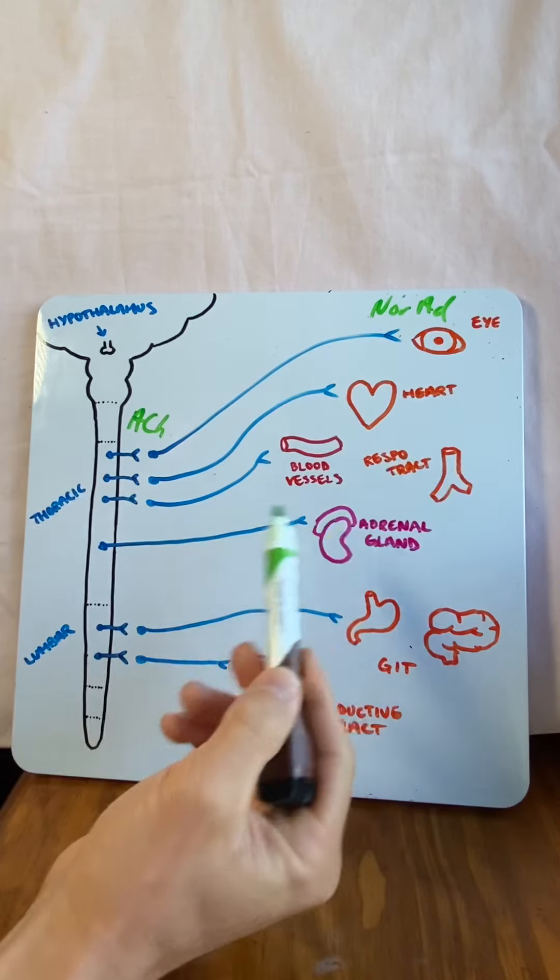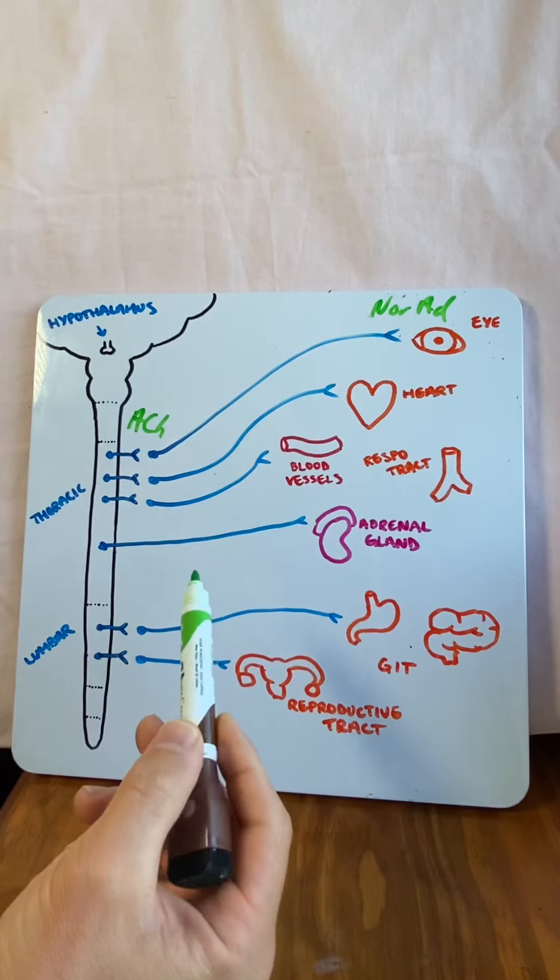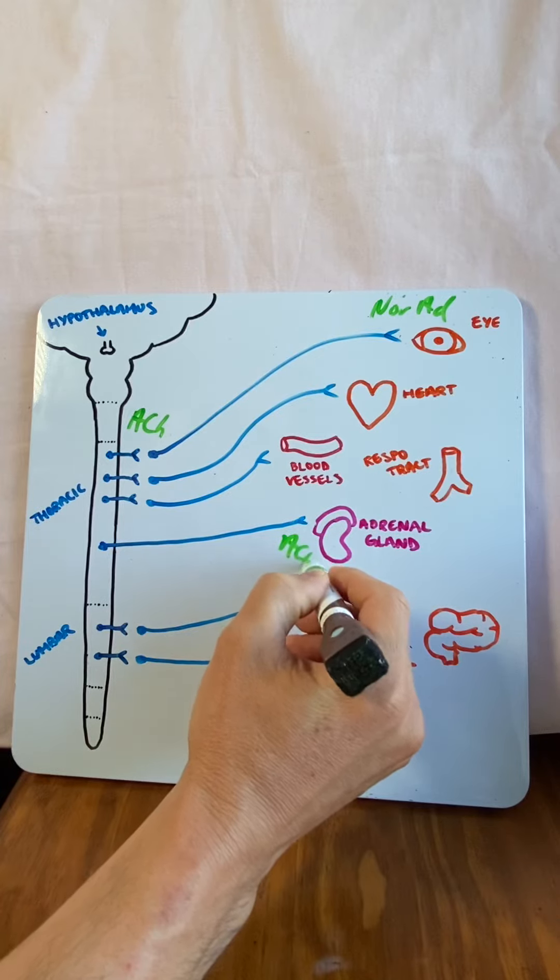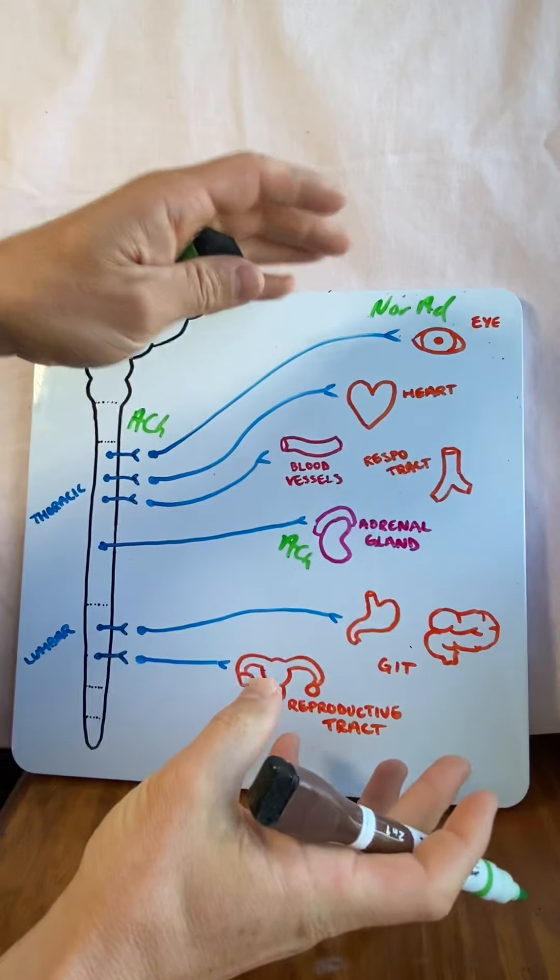Now, you can see that when it comes to the adrenal gland, there's only a preganglionic neuron that goes to the adrenal gland. It releases acetylcholine and the adrenal gland will release adrenaline. Adrenaline is a hormone that jumps into the bloodstream and tells all of these structures to do their job.